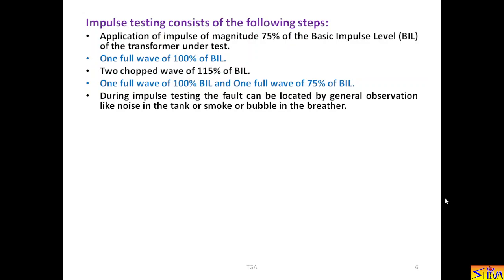During impulse testing, the fault can be located by general observation like noise in the tank or smoke or bubble in the breather. If such type of observations are there, it means the transformer has failed to withstand the applied impulses. If there is a fault, it appears on the oscilloscope as a partial or complete collapse of the applied voltage. Obviously, the voltage will collapse.